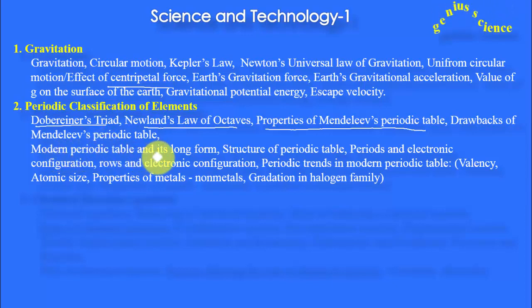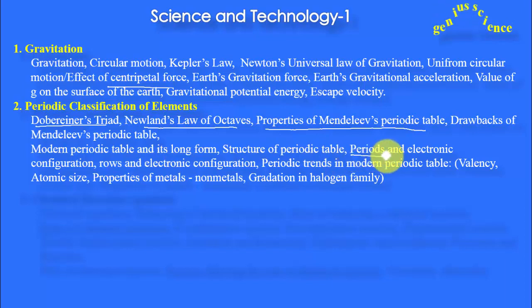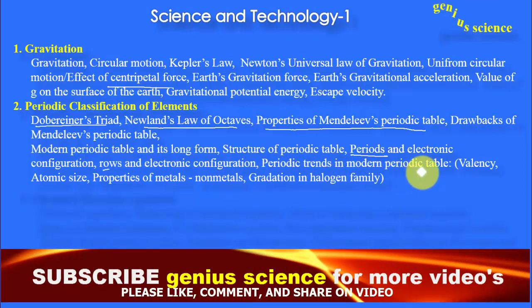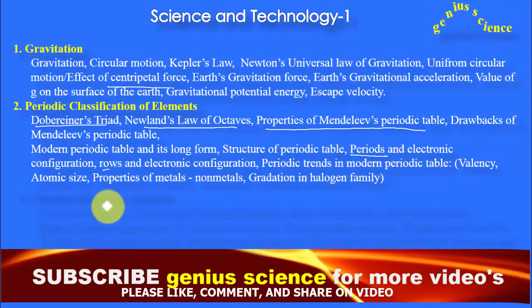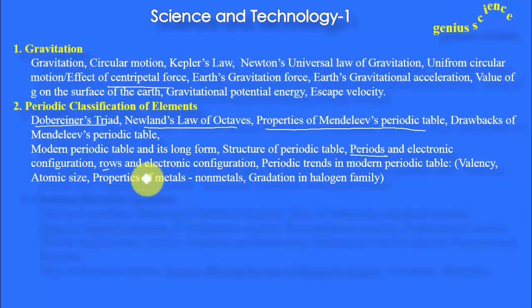The modern periodic table in its long form, structure of the periodic table, periods and electronic configuration, classification in terms of rows — all of these are important. Then periodic trends in the modern periodic table: changes from left to right in atomic size, properties of metals, gradation in the halogen family — these different trends in the periodic table we must learn, including decrease or increase from left to right or right to left.